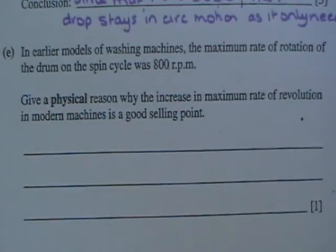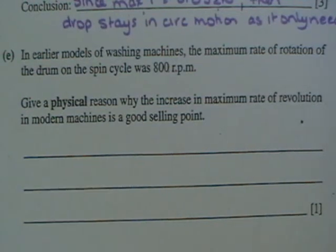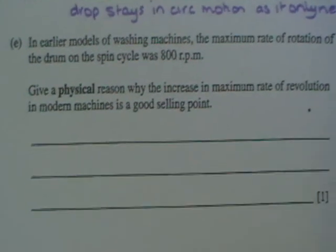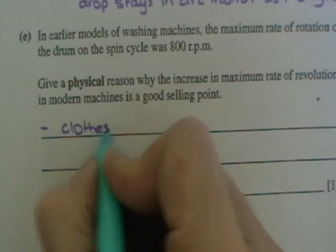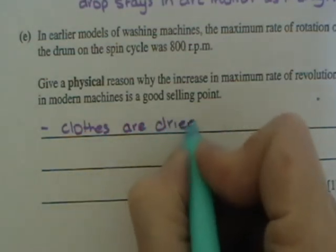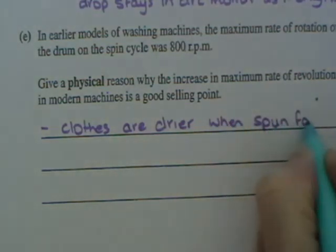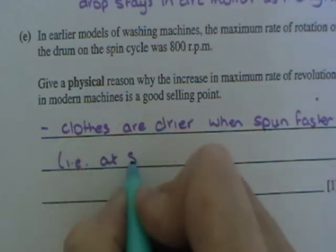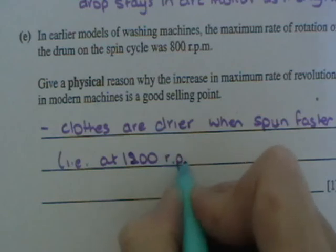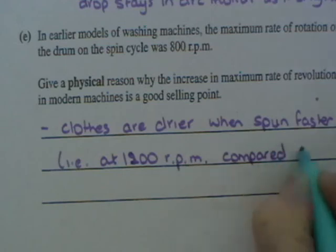In earlier models of washing machines, the maximum rate of rotation on the drum cycle on the spin cycle was 800 revolutions per minute. Give a physical reason why the increase in maximum rate of revolution in modern machines is a good selling point. And it is, of course, that the clothes are drier when they come out. So the clothes are drier when spinning faster or spun faster, i.e. at 1200 revolutions per minute compared to 800.